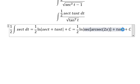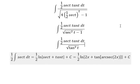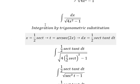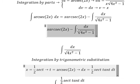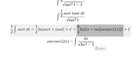And here, secant with arcsecant gives us 2x. Now we combine this one with this one.